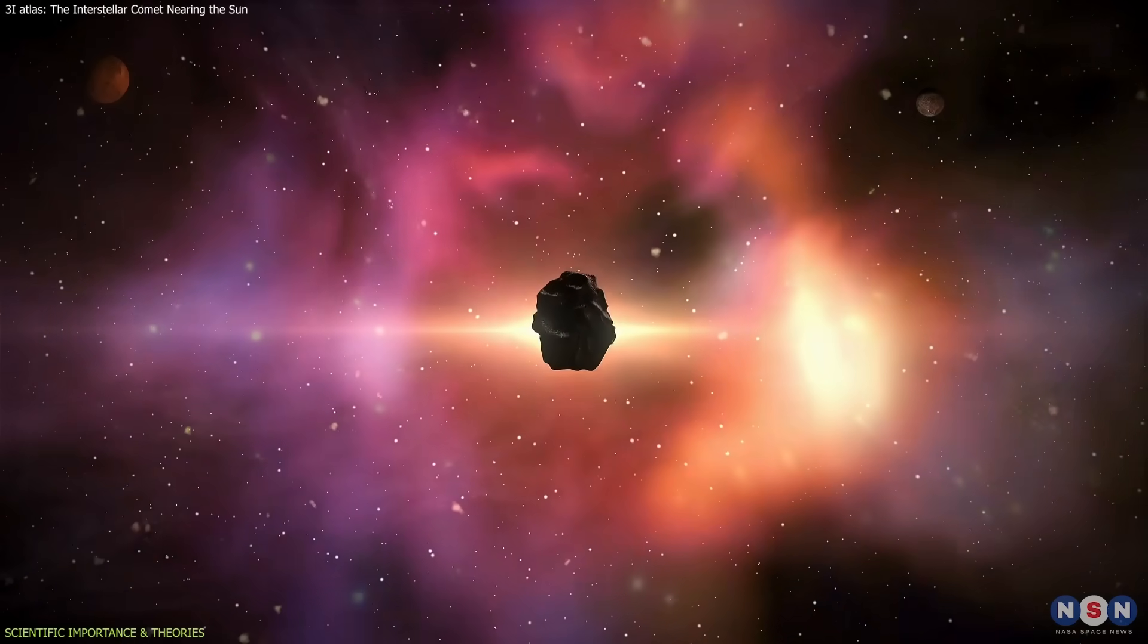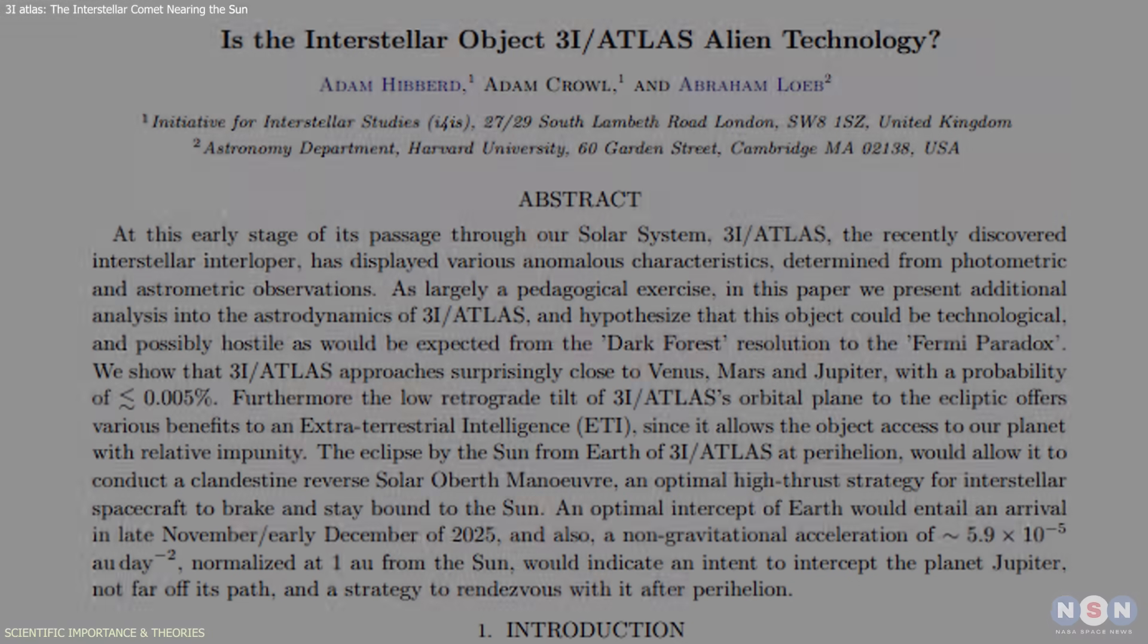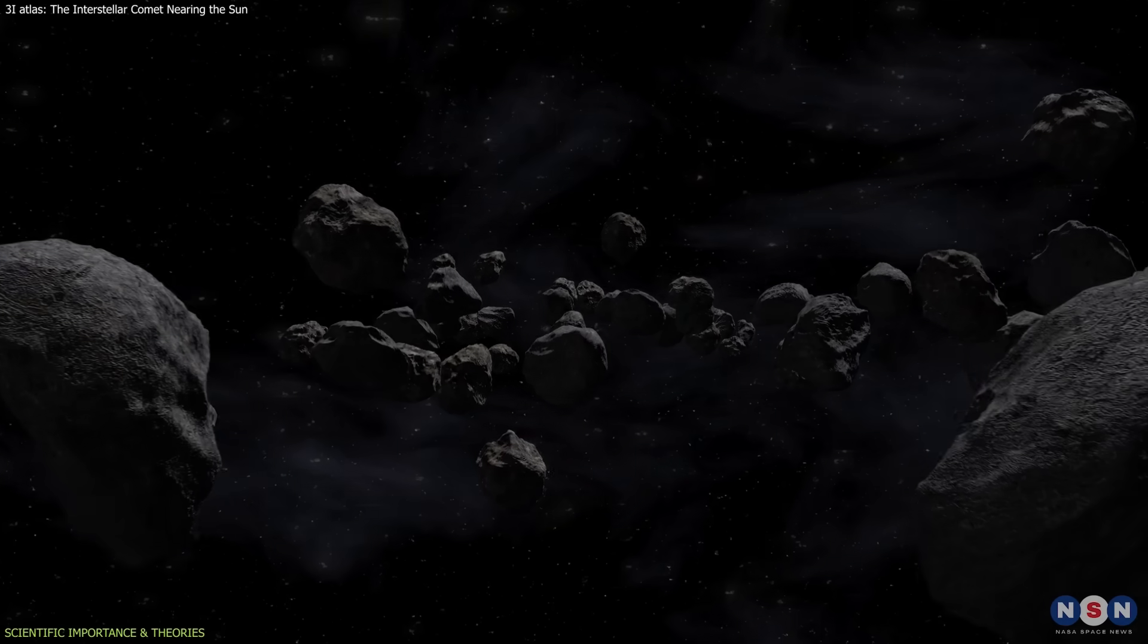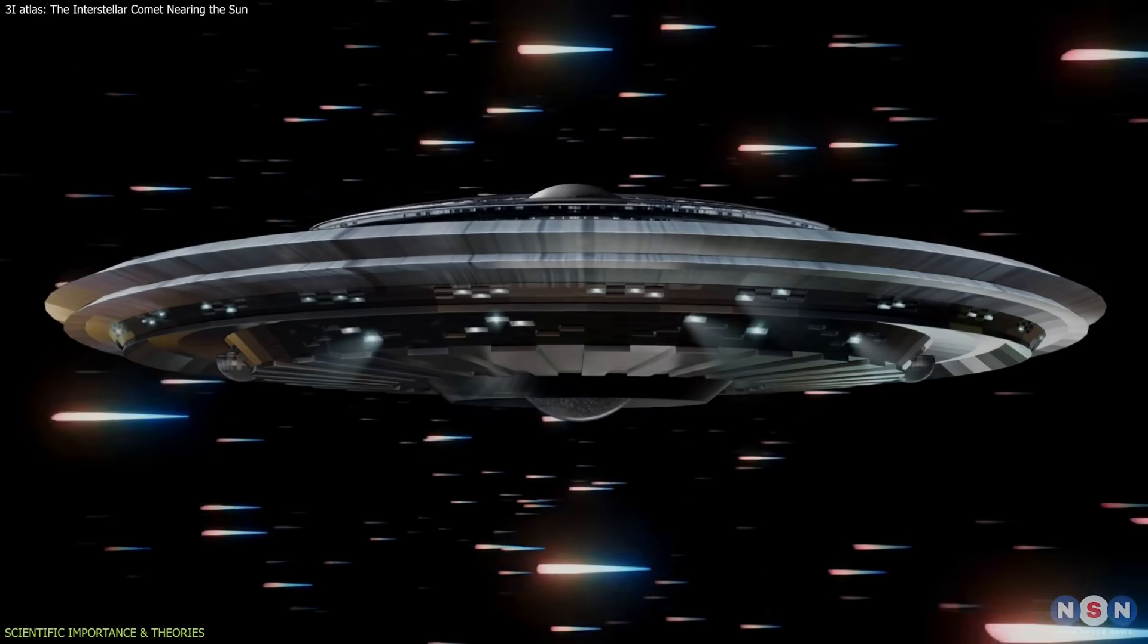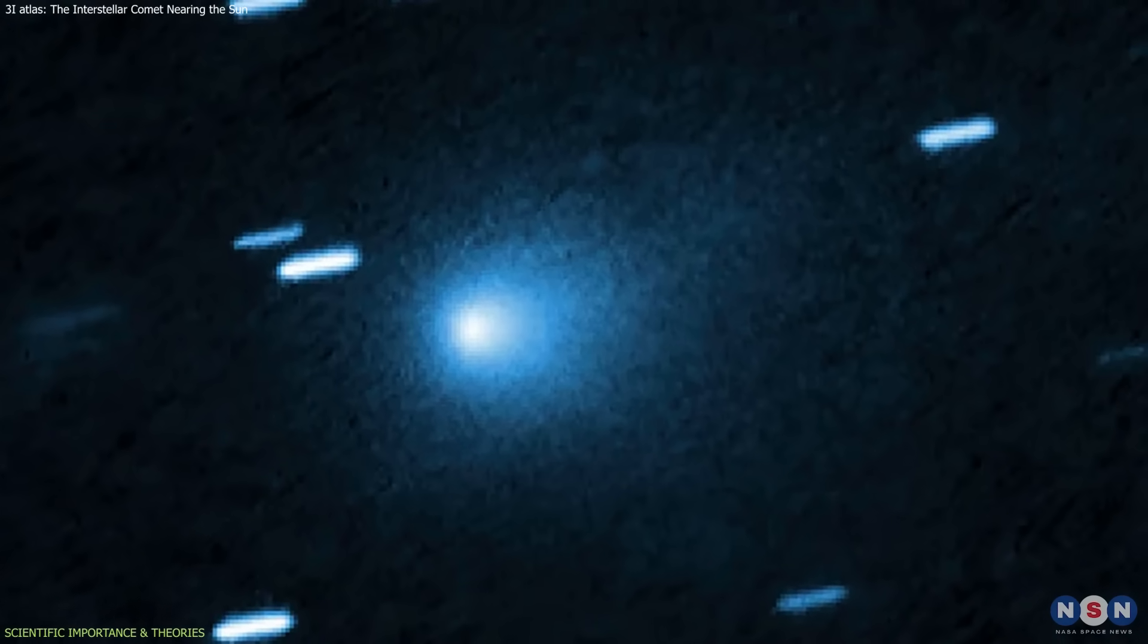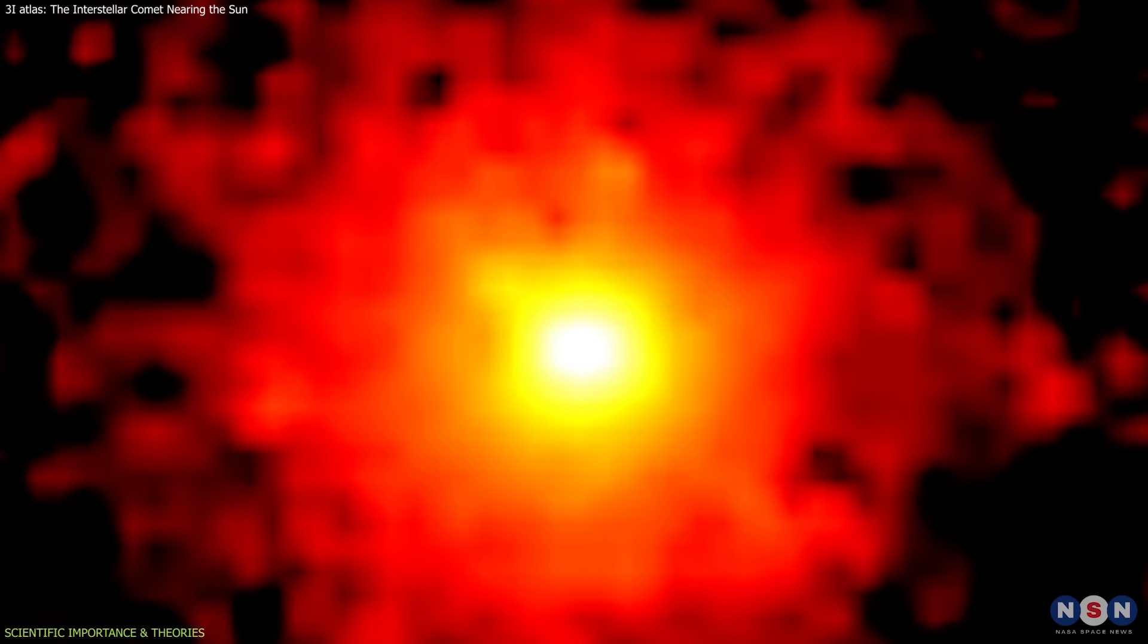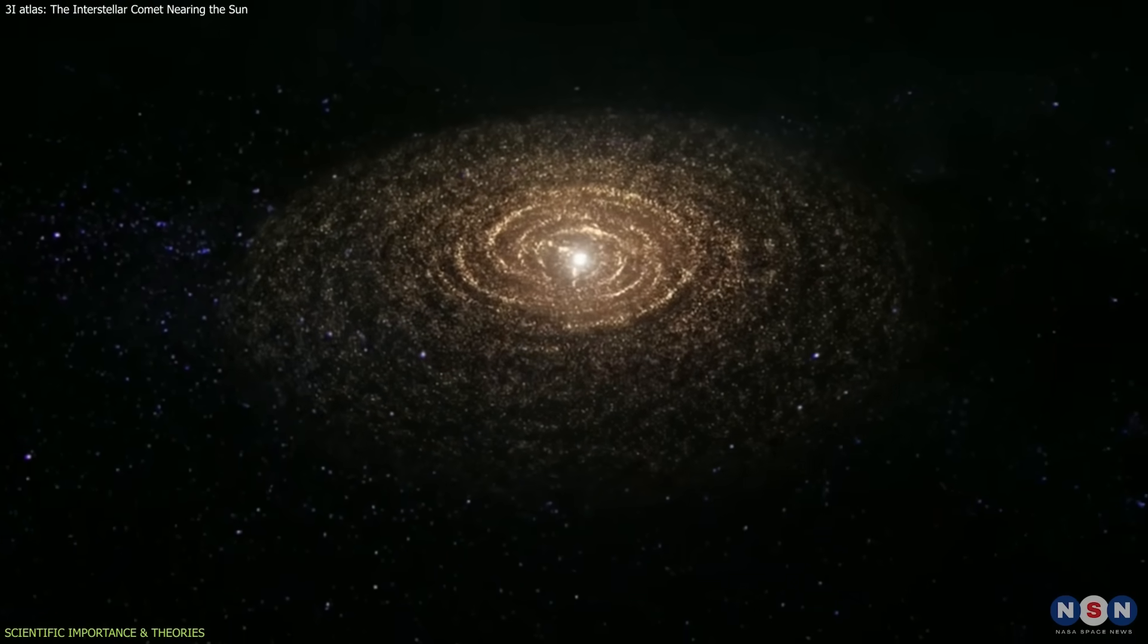Interstellar dust grains can carry chemical fingerprints of their home systems, so this data may help reconstruct the conditions of its birthplace. Some speculative ideas, like those raised by Avi Loeb, propose that unusual behavior in interstellar objects could point to artificial origins. But in the case of 3i Atlas, the current evidence aligns with a natural explanation: volatile rich, compositionally distinct material shaped by a distant star's environment.